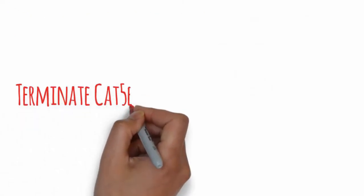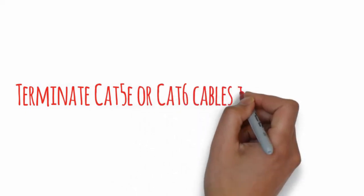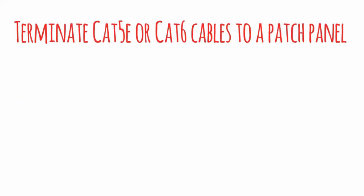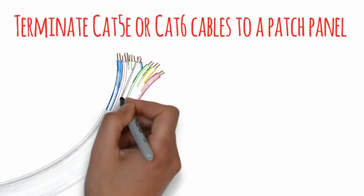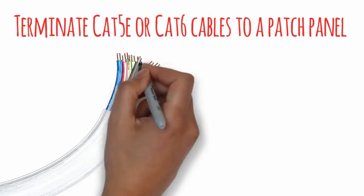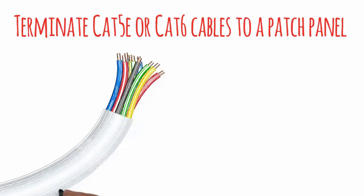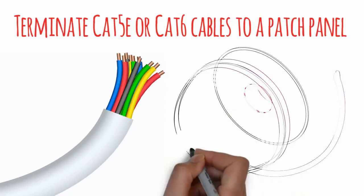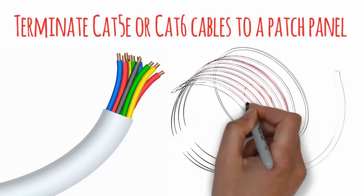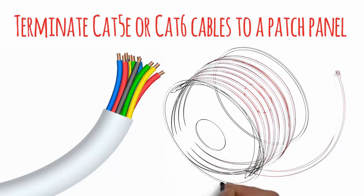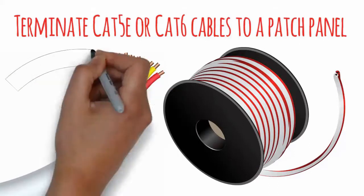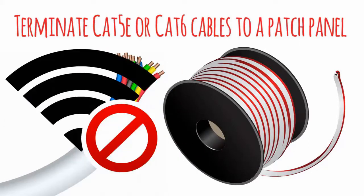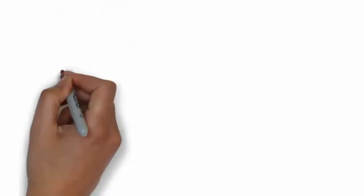Number 3: Terminate Cat5e or Cat6 cables to a patch panel. Due to the cabling requirements for different types of cable such as Cat5, Cat5e, Cat6, etc., different patches need to be used for different purposes. Use the wrong panels and interference will disrupt the quality and reliability of a network infrastructure.